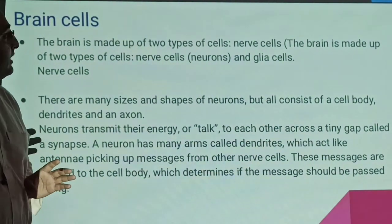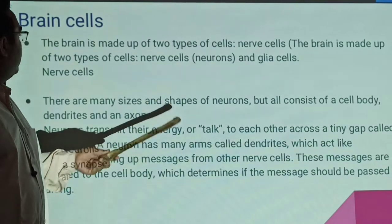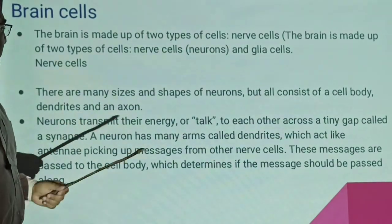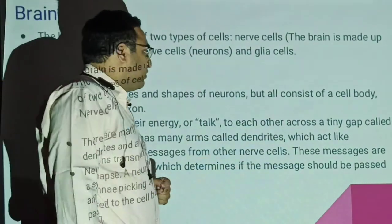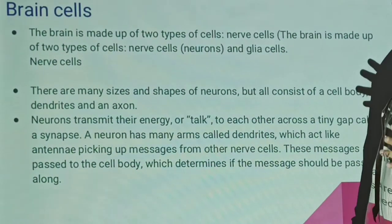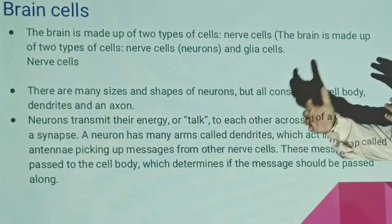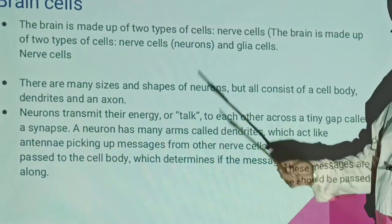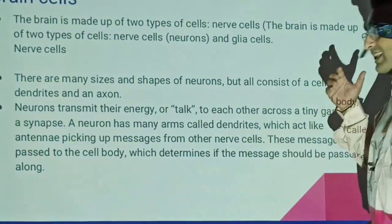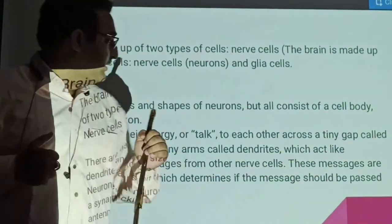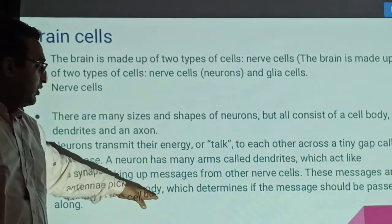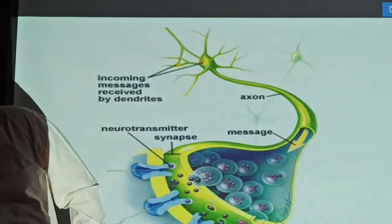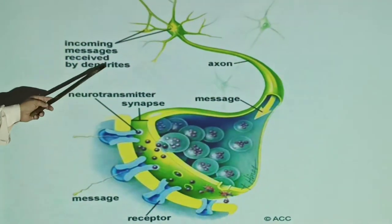Now let's look at brain cells. Brain cells are of two types: nerve cells and glial cells. Nerve cells are called neurons. Neurons come in many sizes and shapes but mainly consist of a cell body, axons, and dendrites. Dendrites act like antennas — they receive incoming messages. The message passes through the cell body and on to other neurons.